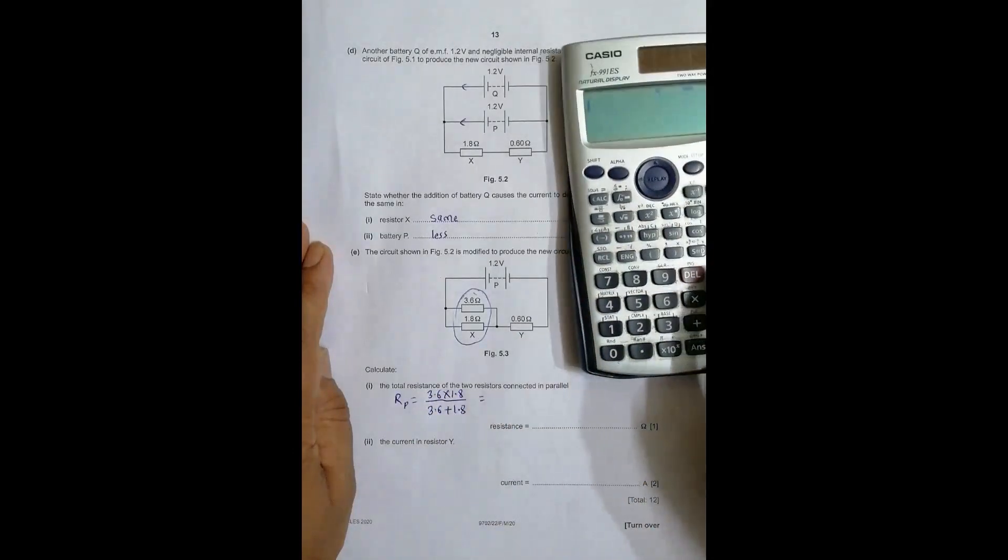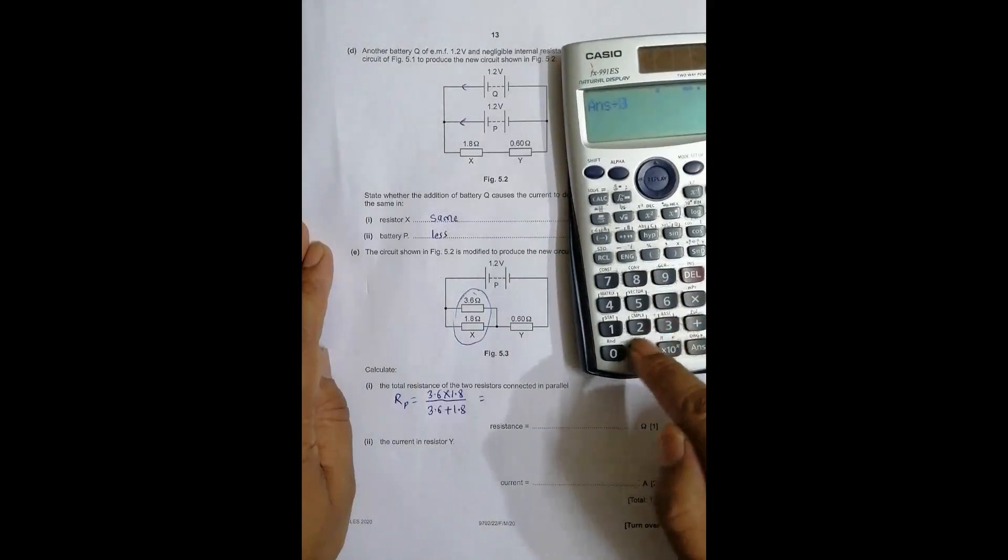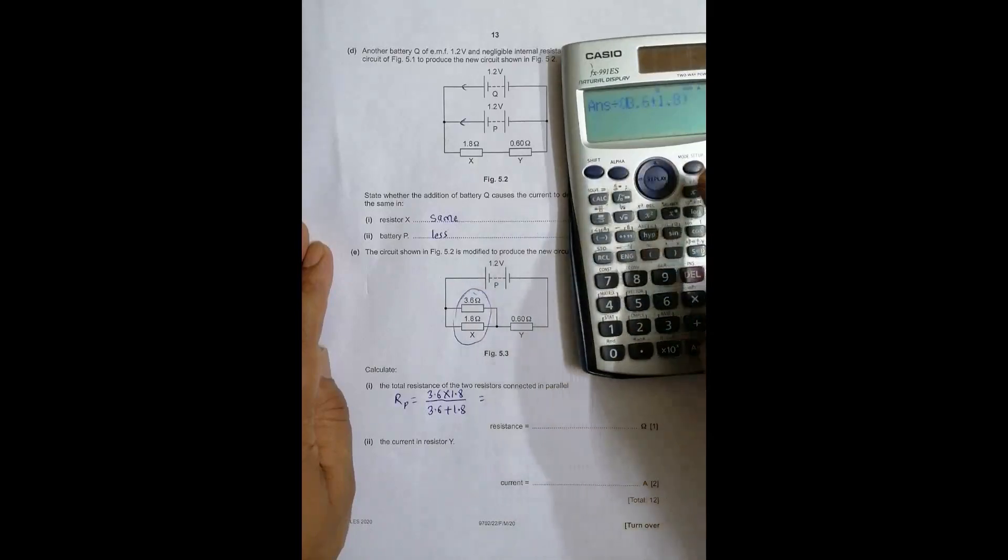This gives us 3.6 × 1.8 divided by 3.6 + 1.8. I should use a bracket otherwise it will not give proper results following the BODMAS rule. This equals 1.2 ohm. Now we have to find the current in resistor Y.